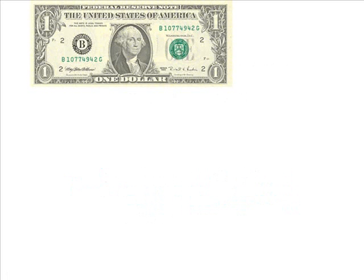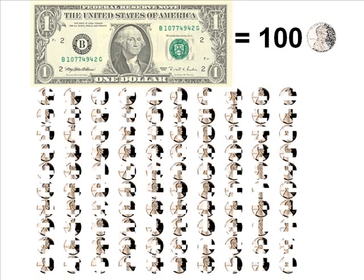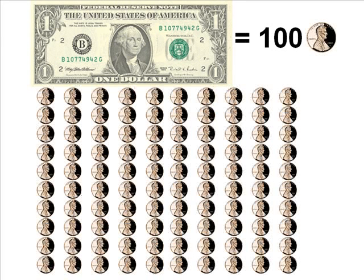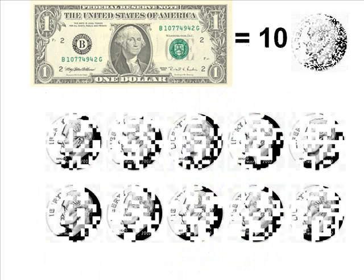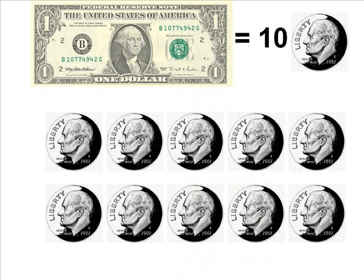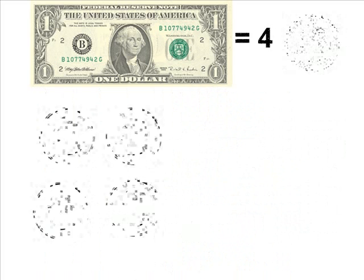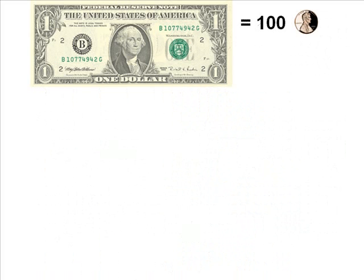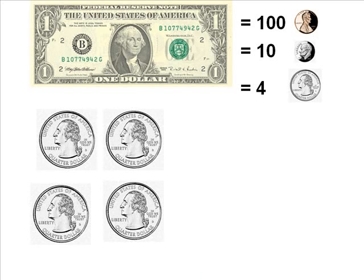Let's start off with a dollar. We know that a dollar is equal to 100 pennies, 10 dimes, and four quarters. We'll start with the last one, which is four quarters.